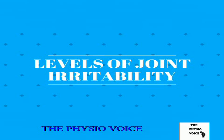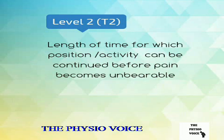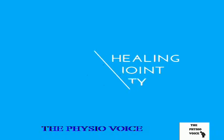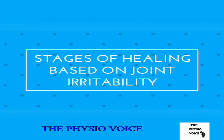Level 1, T1, is the length of time for which a position or activity can be maintained before pain commences or increases. Level 2, T2, is the length of time for which a position or activity can be continued before pain becomes unbearable. Level 3, T3, is the length of time taken by pain to return to its baseline level after the cessation of the activity. Now that we know about the various levels of joint irritability, let us learn how to determine the stages of tissue healing with the help of the same.